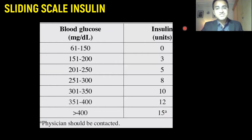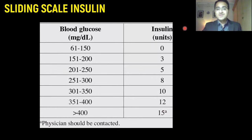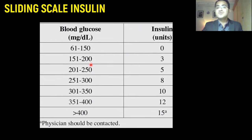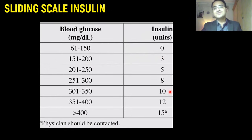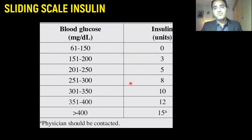This is a chart that shows the units of insulin according to the blood glucose. If the glucose level is less than 150, no insulin is needed. If it is between 151 to 200, three units of insulin is given, and it continues so on, increasing the insulin dose based on the blood glucose level before meals.